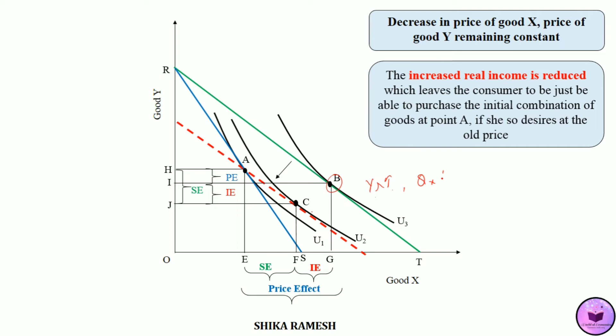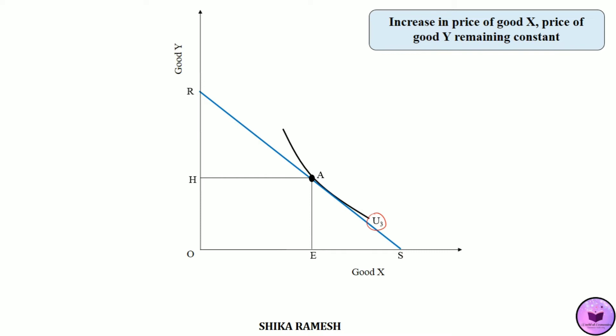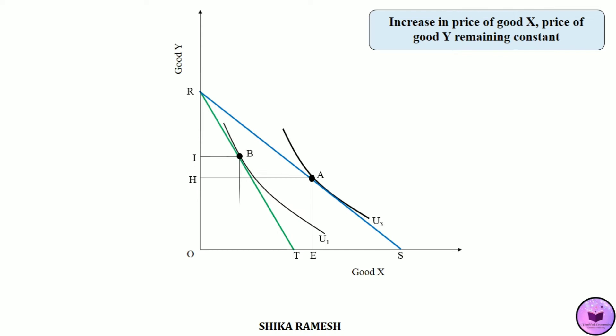Next, we shall see the case wherein the price of good Y remaining constant, what happens when the price of good X increases. Initially, we have a budget line RS wherein the consumer reaches equilibrium at point A at a higher utility level U3, consuming OE amount of good X and OH amount of good Y. When the price of good X increases, the real income of the consumer decreases. This decrease in real income is shown by an inward shift in the budget line from RS to RT, and the consumer reaches a new equilibrium at point B at a lower utility level U1, purchasing OG amount of good X and OI amount of good Y.